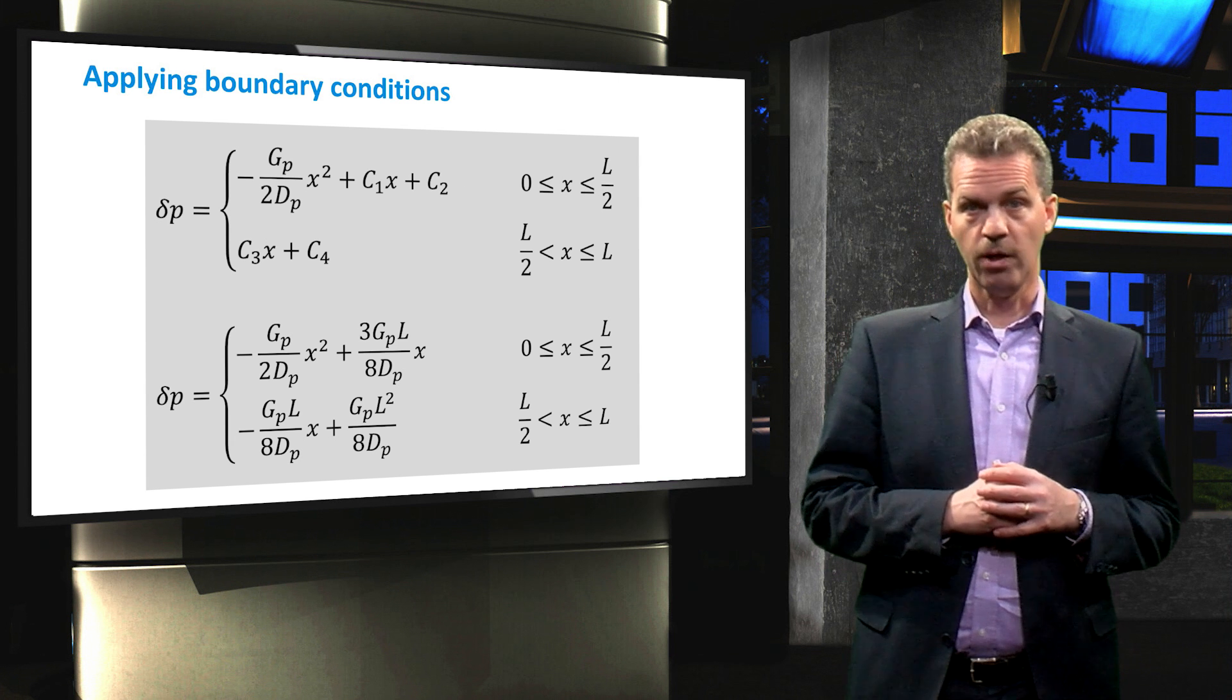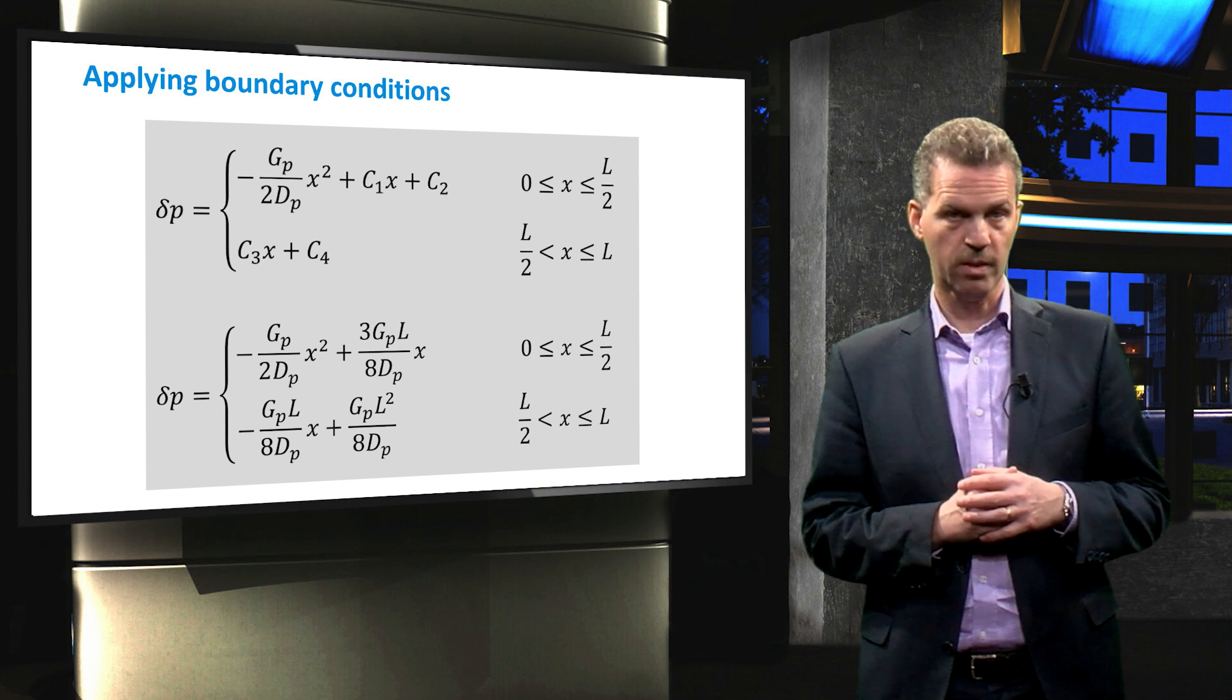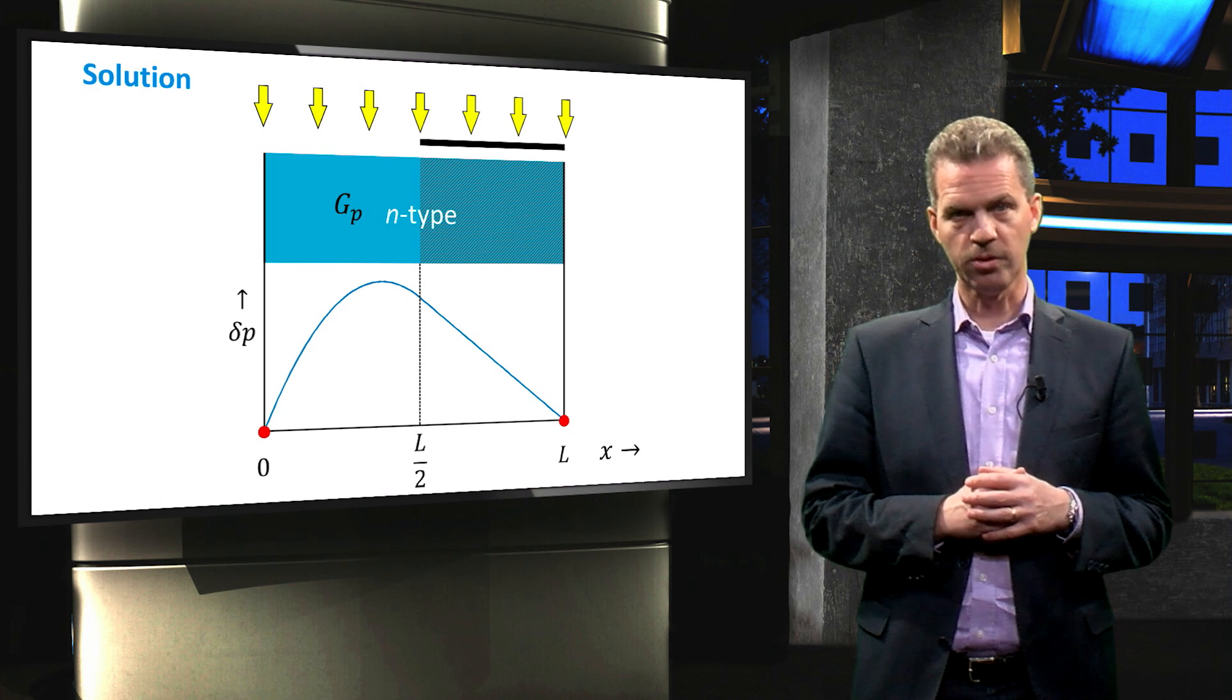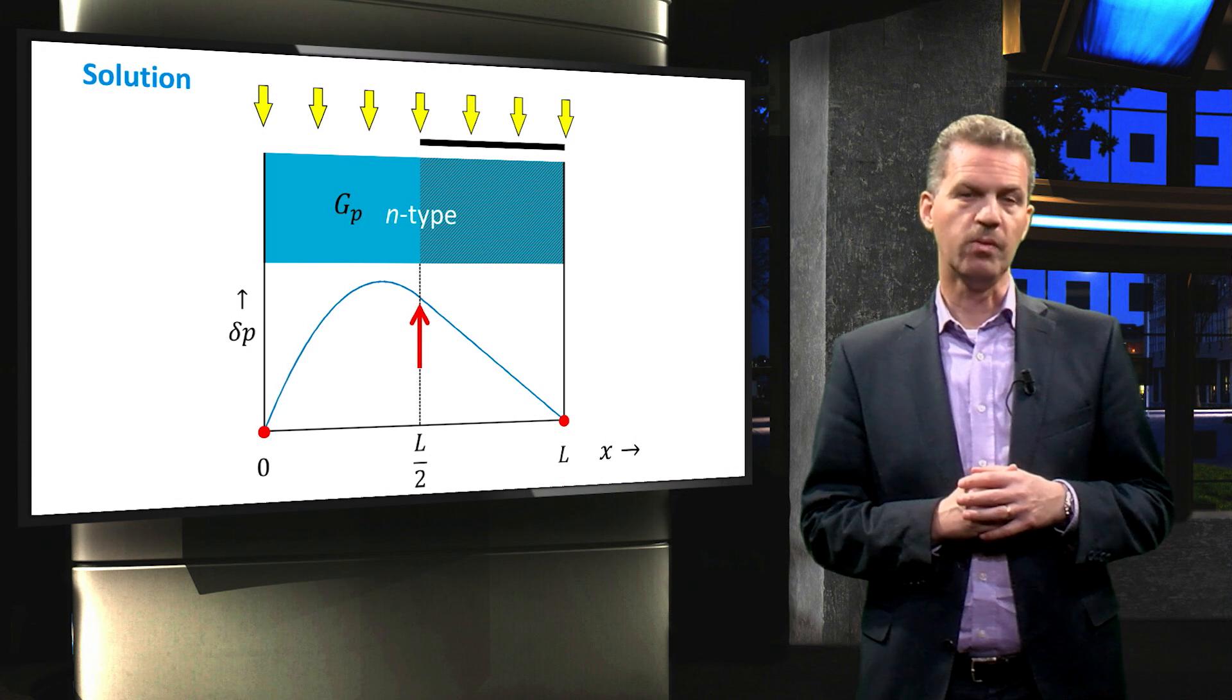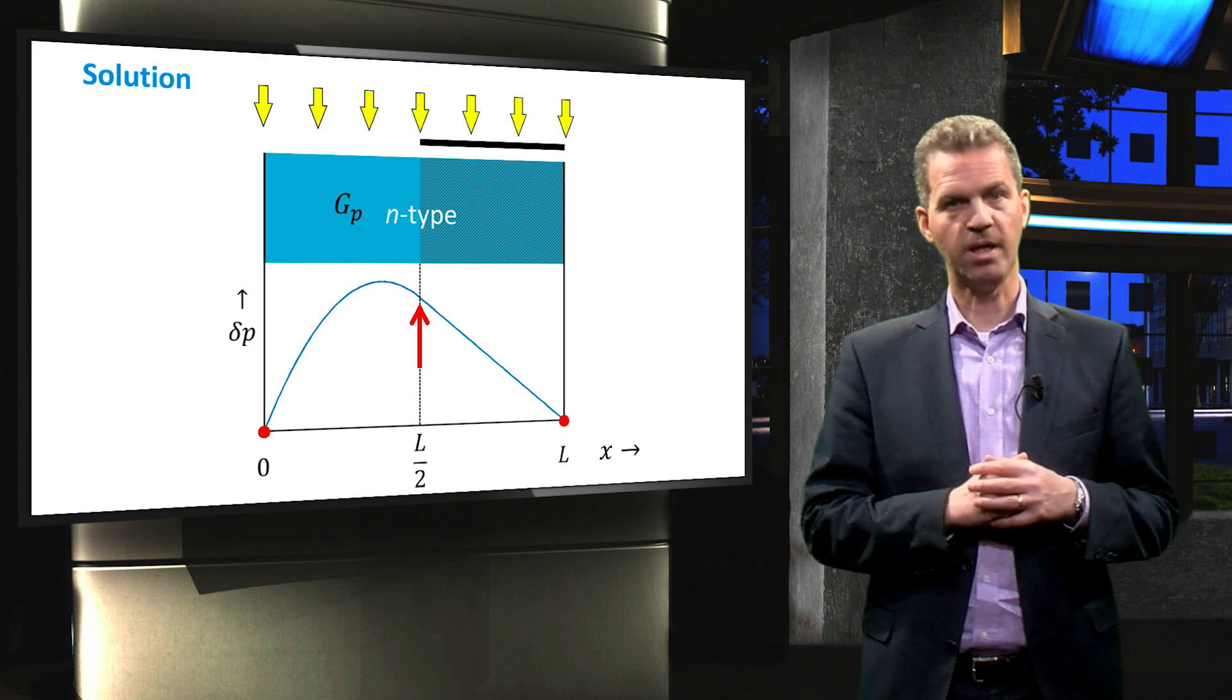Now we have the final solution. We can analyze it further by plotting it, resulting in the following graph. We see that at the edges the excess carrier concentration is indeed zero. And at the interface between illumination and shading we see that both the value and the slope of the carrier concentration are continuous.